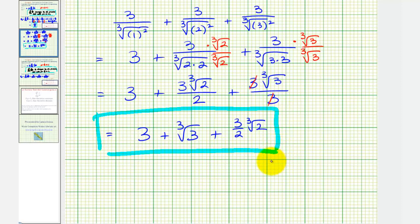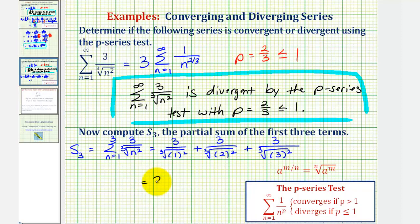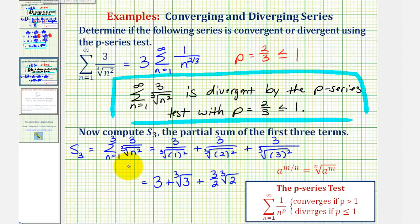Going back to the previous slide, let's just rewrite this. We have three plus the cube root of three plus three-halves times the cube root of two. I hope you found this helpful.